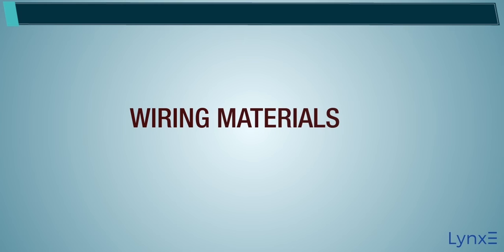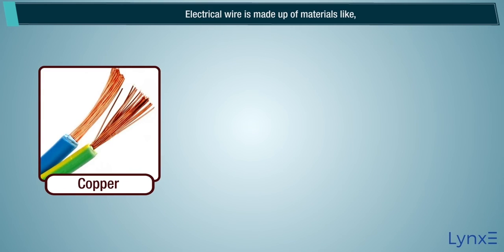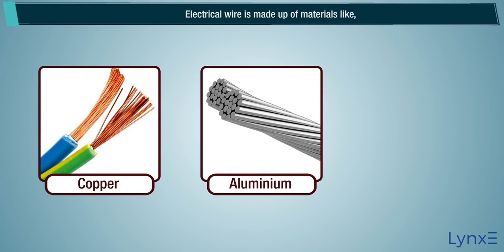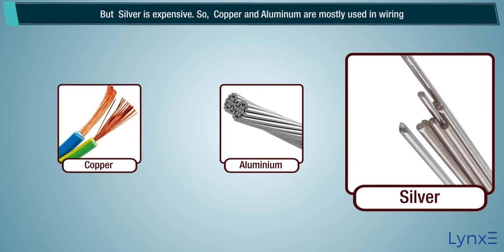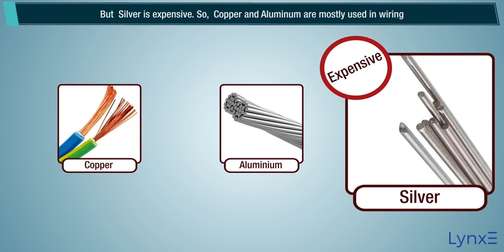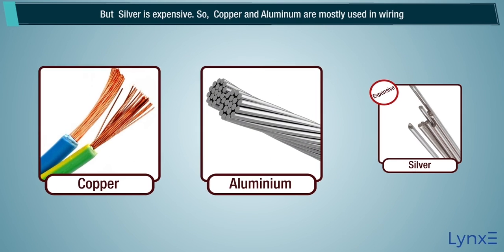Wiring Materials: Electrical wire is made of materials like copper, aluminum, and silver. But silver is expensive, so copper and aluminum are mostly used in wiring.